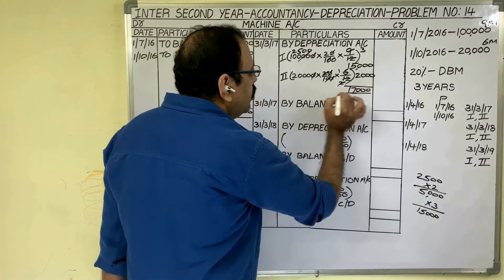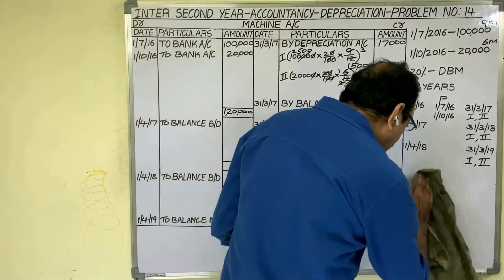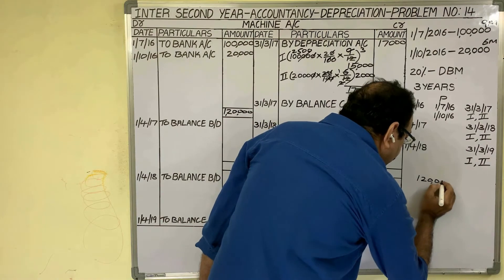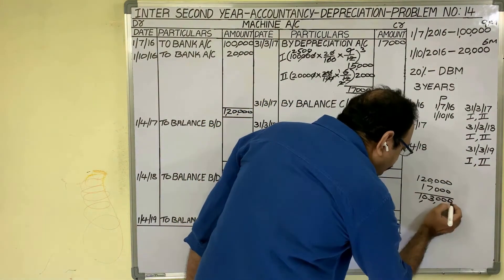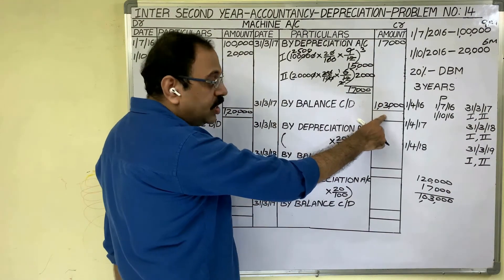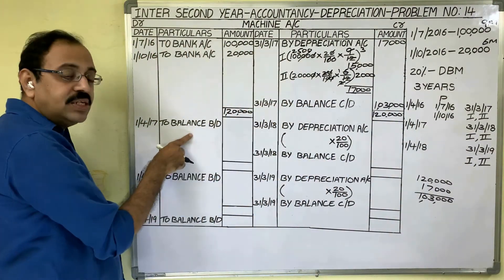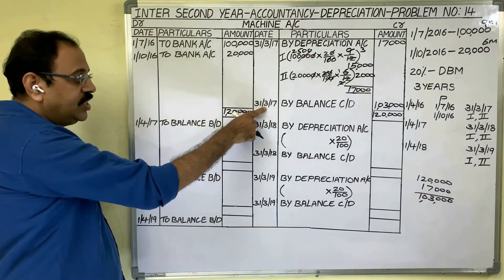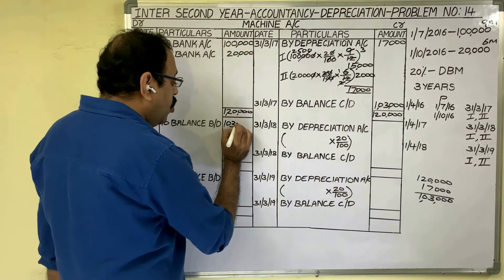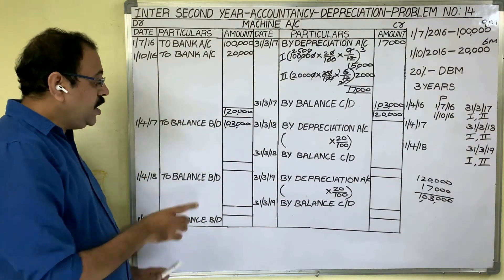Total depreciation is 15,000 plus 2,000 equals 17,000. Write this 17,000 in the amount column. The debit total is 1 lakh 20 thousand. Debit total minus credit total gives 1 lakh 3 thousand. Write on the credit side: By Balance Carried Down — 1 lakh 3 thousand. Put the total 1 lakh 20 thousand. First year is completed. Bring the balance to the next year: on 1st April 2017, To Balance Brought Down — 1 lakh 3 thousand.